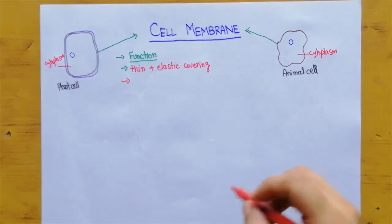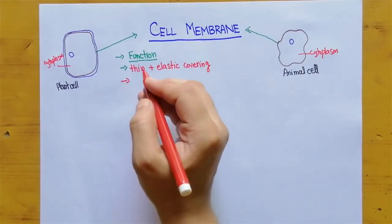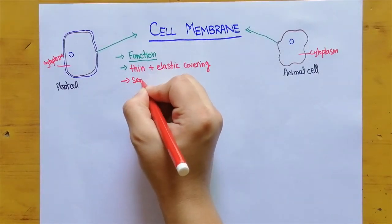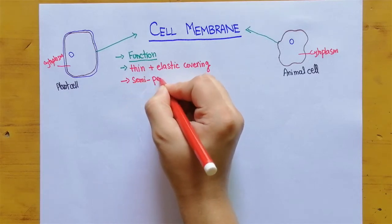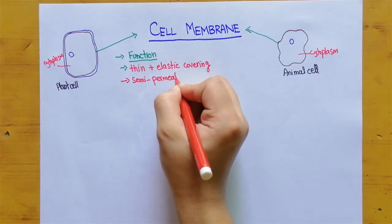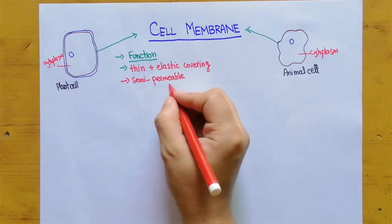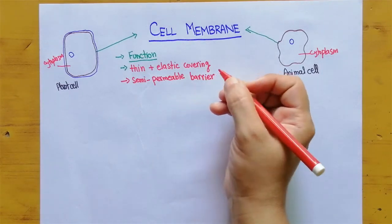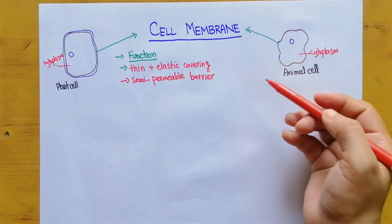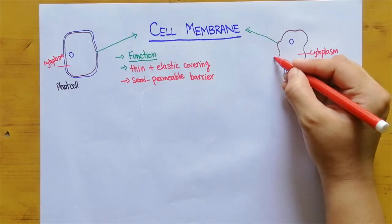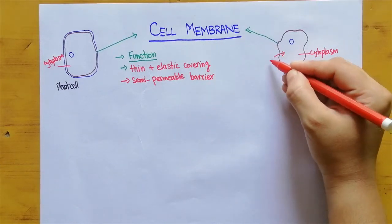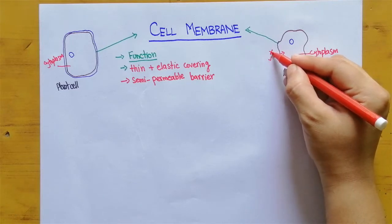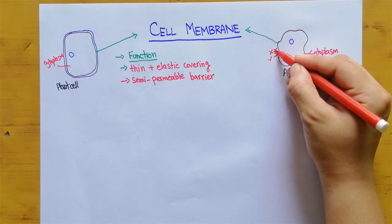What is the other function of cell membrane? Cell membrane is a semi-permeable membrane or semi-permeable barrier which allows some molecules to enter the cell and some molecules they do not enter the cell.